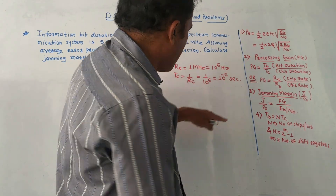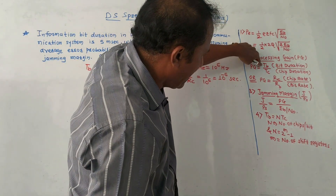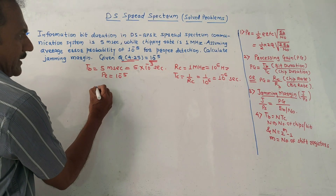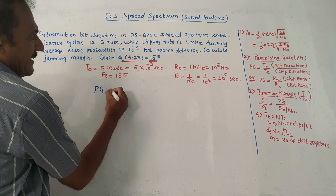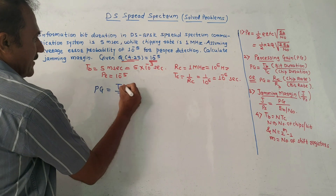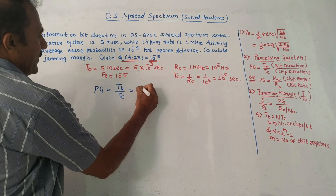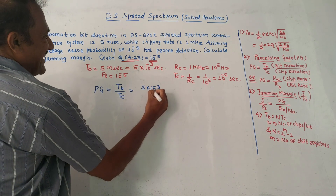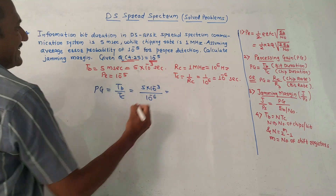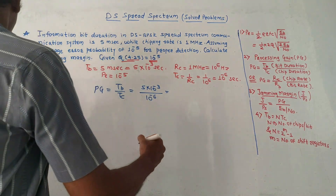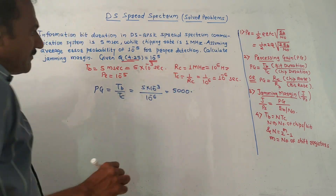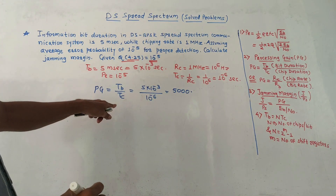We have two formulae for PG, but we have already calculated values of TB and TC. So let us make use of formula number 2. Processing gain is TB upon TC. Value of TB is 5 into 10 raised to minus 3, upon value of TC which is 10 raised to minus 6. So processing gain will be 5000. This is the value of PG, processing gain.